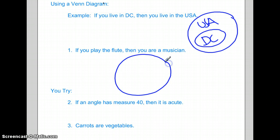If you play the flute, then you are a musician. Musicians are going to be our outer circle because not all musicians play the flute. But the flute is within inside because people that play the flute are musicians.